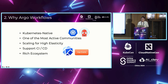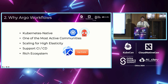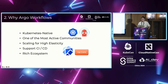In addition to simple definition, Argo Workflows also has many advantages. First, it is cloud-native and can integrate seamlessly with the Kubernetes ecosystem. Second, the community is active — over 900 people contributed to the Argo community last year, ranking third in the entire CNCF community. Third, it is easy to scale. Fourth, it supports CI/CD, so it's possible to integrate workflows with build and release systems. Fifth, the ecosystem is rich — many projects rely on Argo Workflows, such as Argo Events and Kubernetes Flows, which help construct event-driven workflows.